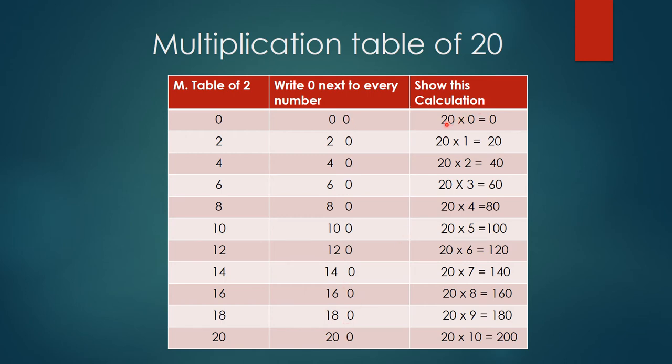So we get the table of 20: 20×0=0. Any number multiplied by 0 gives us 0. 20×1=20, 20×2=40, 20×3=60, 20×4=80, 20×5=100, 20×6=120, 20×7=140, 20×8=160, 20×9=180, and 20×10=200.